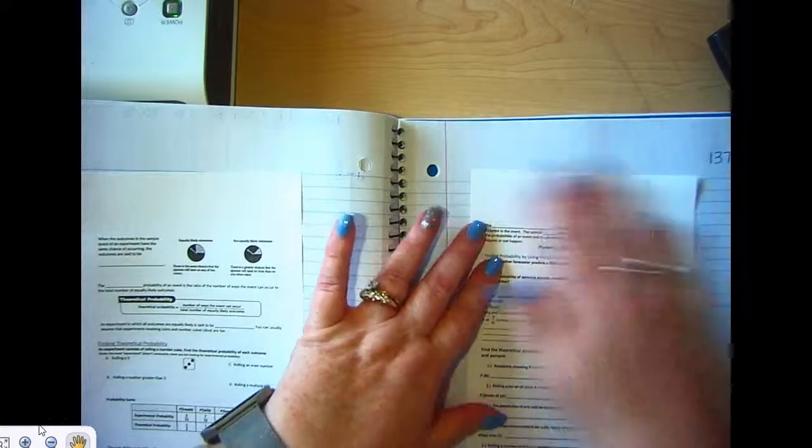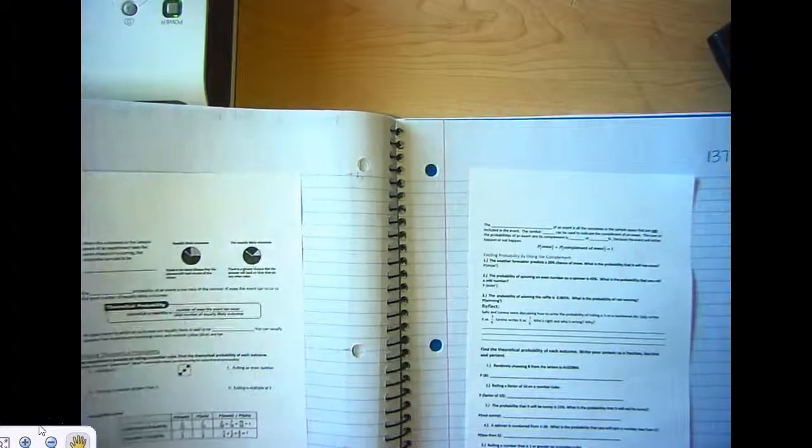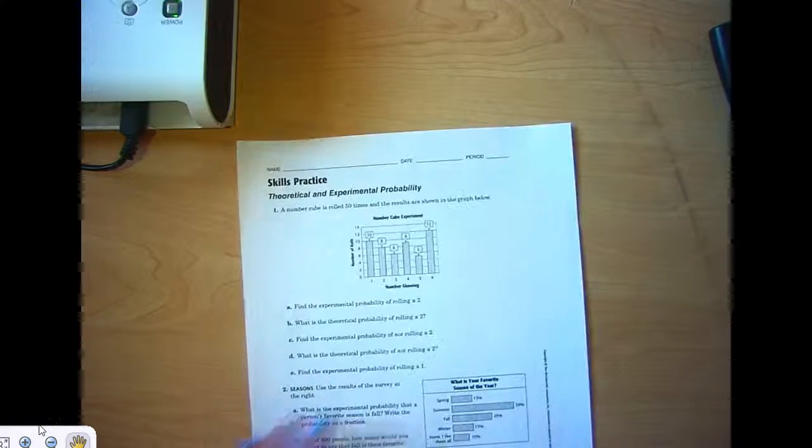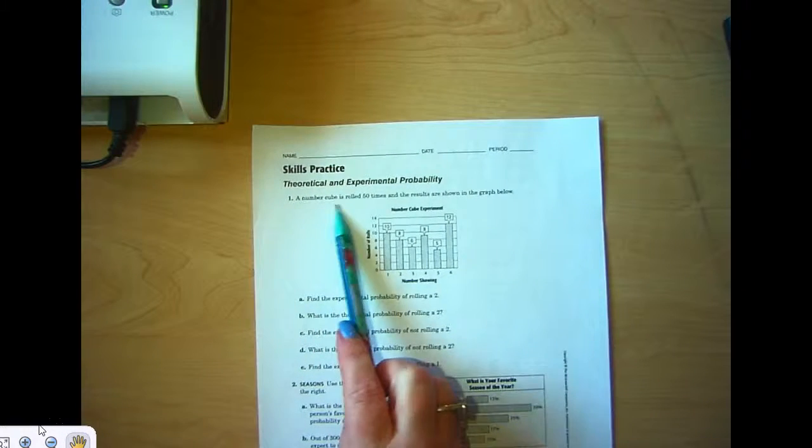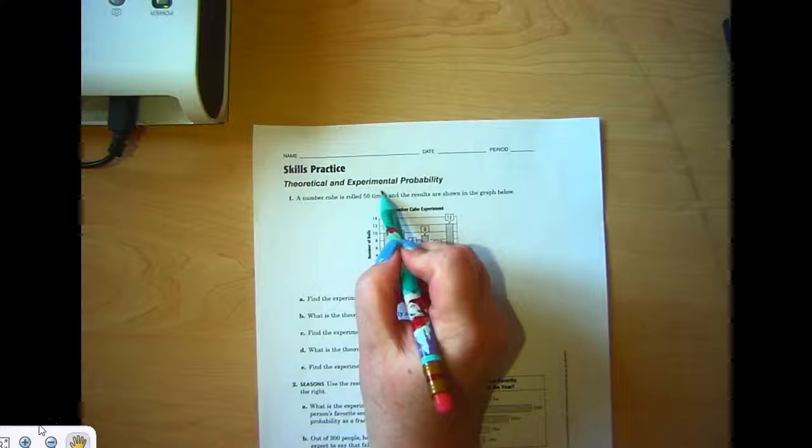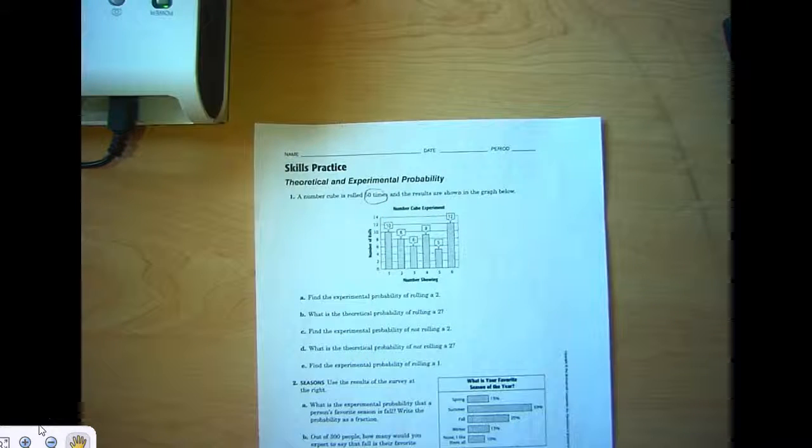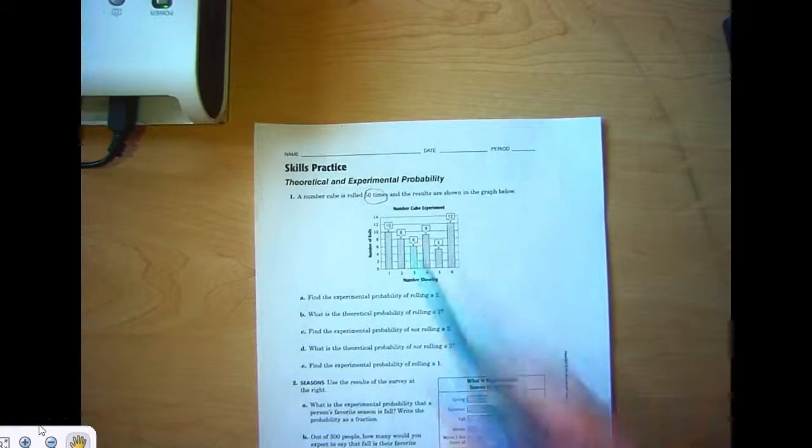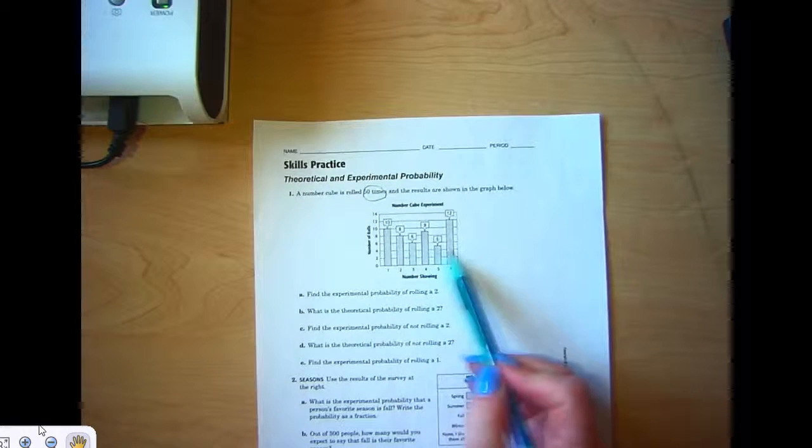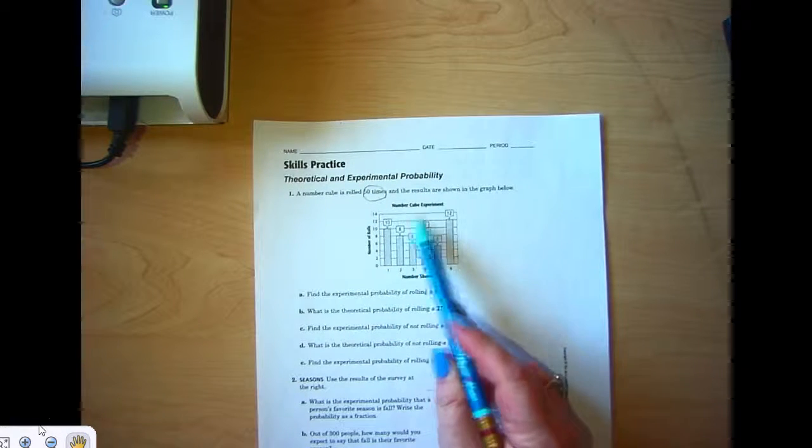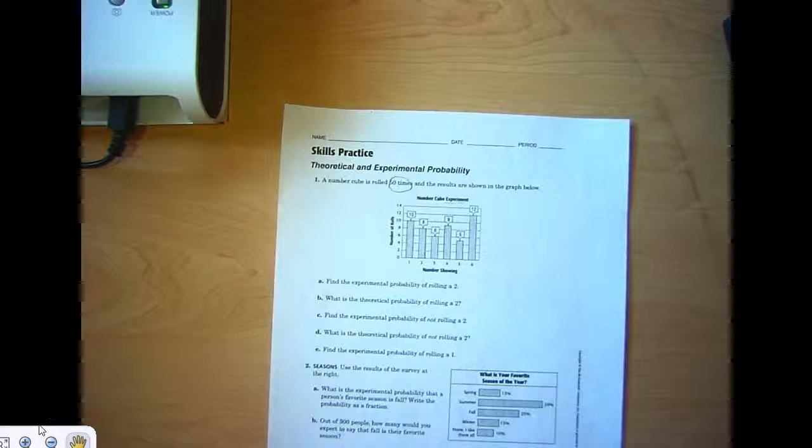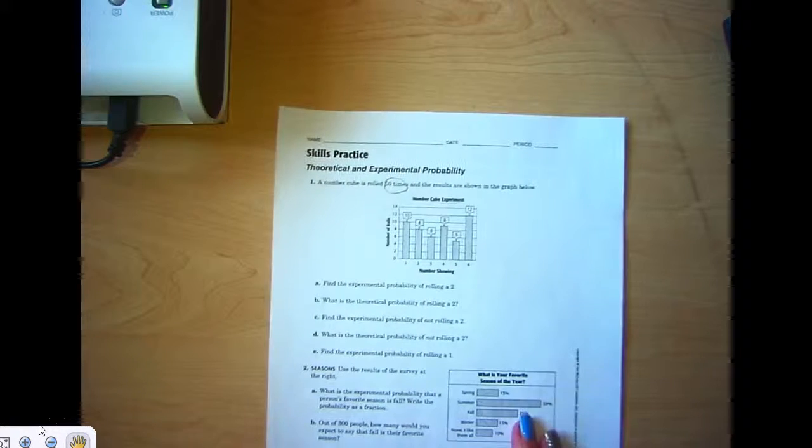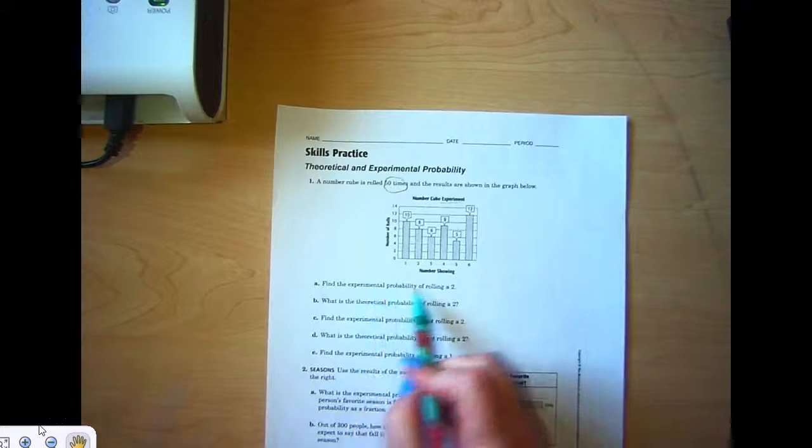All right, then let's take a look at the skills practice. I'm just going to get you started. Theoretical and experimental probability: a number cube is rolled 50 times—that's important to note—and the results are shown in the graph. If we are actually rolling it 50 times and we see results in a number cube experiment, this is the data for the experimental probability.